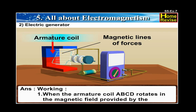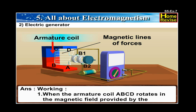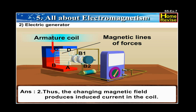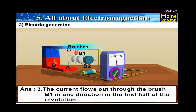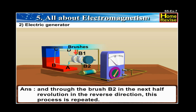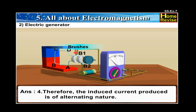Working: 1. When the armature coil ABCD rotates in the magnetic field provided by the strong magnets, it cuts the magnetic lines of force. 2. Thus, the changing magnetic field produces induced current in the coil. 3. The current flows out through brush B1 in one direction in the first half of the revolution, and through brush B2 in the next half revolution in the reverse direction. This process is repeated. 4. Therefore, the induced current produced is of alternating nature.